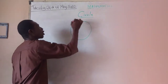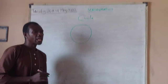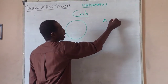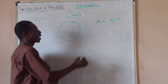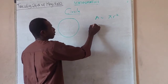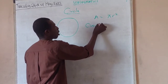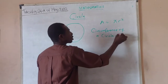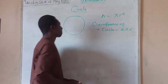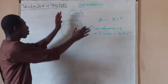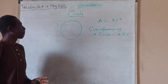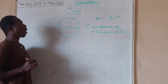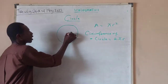Cycle is the continuous dots. There are two things we will learn about cycle today. We will learn about the area of the cycle, which is pi r squared, and the circumference of the cycle, which is 2 pi r. So basically, this is a cycle. At any point from the center to any part of the cycle, it is called a radius.